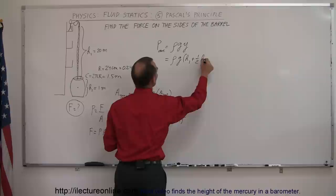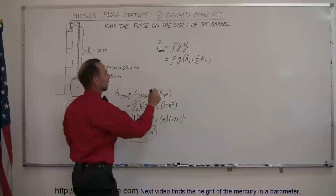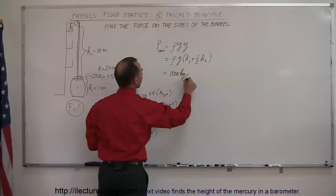Since h₁ is 20 meters and h₂ is 1 meter, it would be 20 and a half meters of water column height.